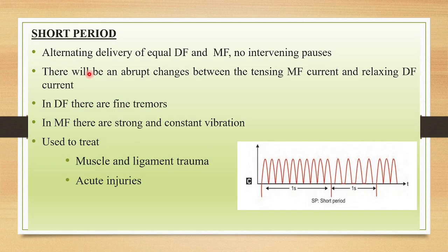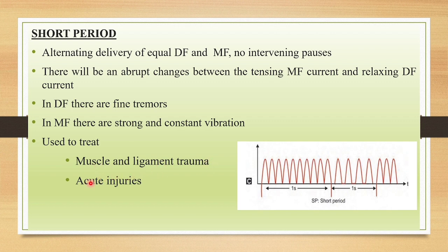The next mode is short period or cortex period. It is an alternate delivery of equal diaphase and monophase without any intervening pauses. There are apparent changes between tensioning in the monophasic current and relaxing in the diaphase current. In diaphase there are fine tremors, and in monophasic there are strong and constant vibration effects. This short or cortex period can be used to treat muscle and ligament trauma and acute injuries.